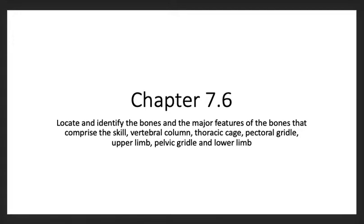Today we're covering Chapter 7.6, where we'll identify and locate the major bones of the skull, vertebral column, thoracic cage, pectoral girdle, upper and lower limb, and pelvic girdle. It's a lot of information that will go by pretty quickly, but I hope it's very helpful for you.